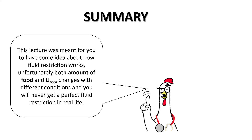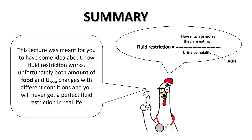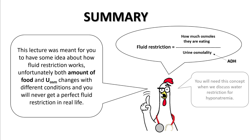Unfortunately, because these things can change with time, you will never get a perfect number. However, you can use the general principle: fluid restriction equals the amount of osmoles the patient is eating divided by urine osmolality. You will need these concepts when you discuss free water restriction for hyponatremia. Thank you.